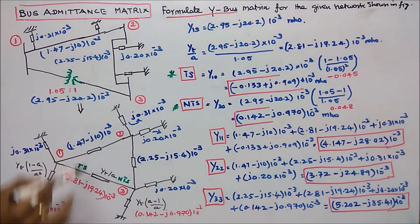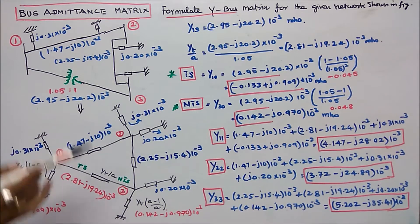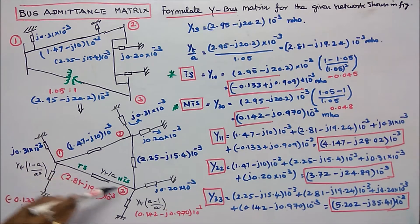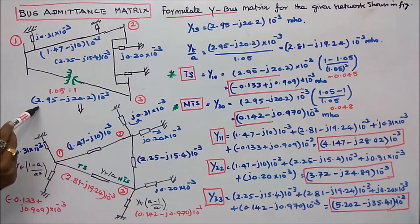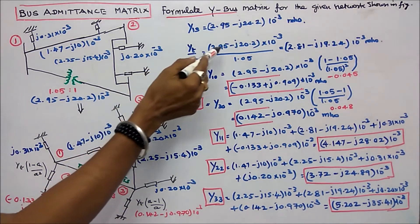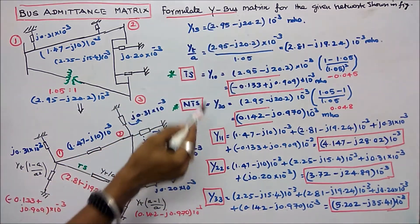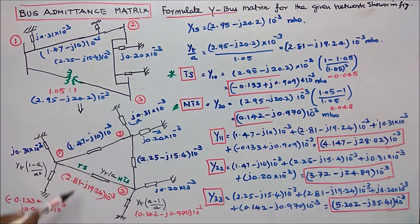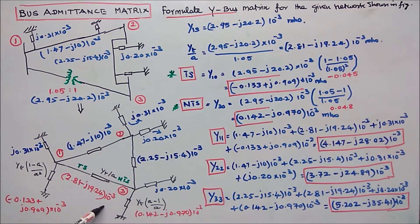The first step is to draw the equivalent circuit and mark all the admittance values. When the transformer is included in line 1-3, this admittance is yt divided by a. Here yt equals 2.95 minus j20.2 into 10 power minus 3. Dividing by a equal to 1.05, this admittance becomes 2.81 minus j19.24 into 10 power minus 3.